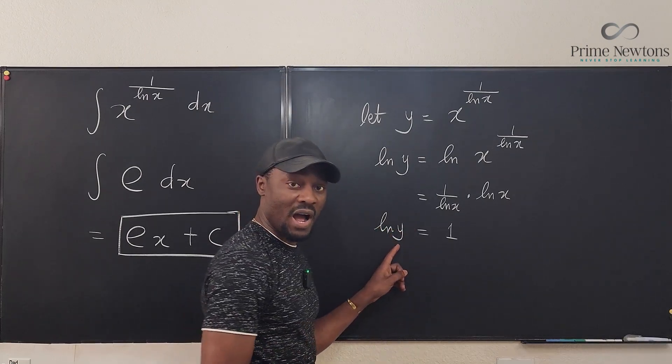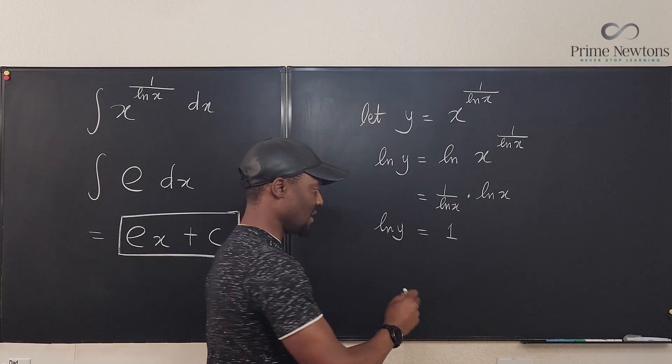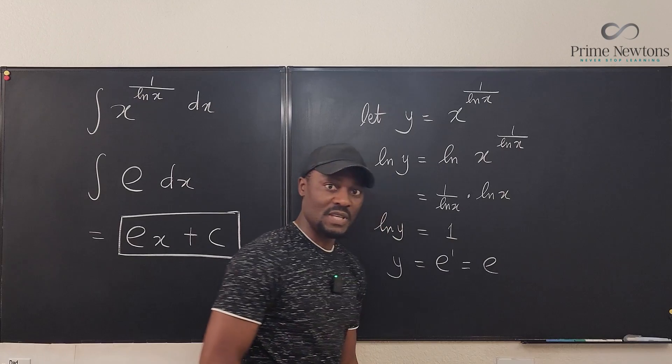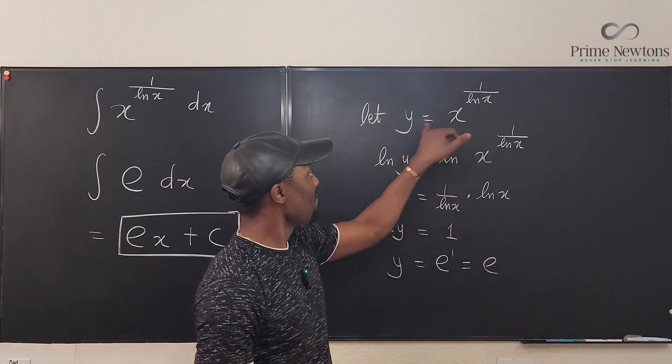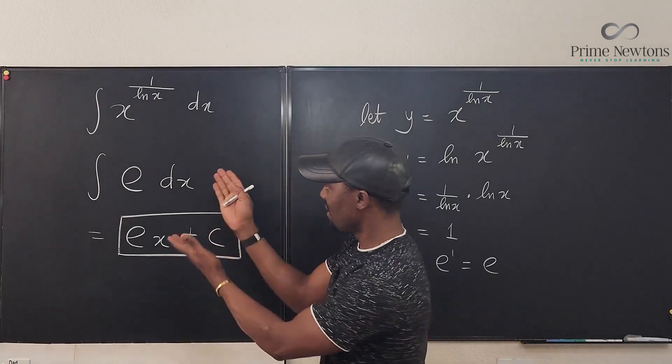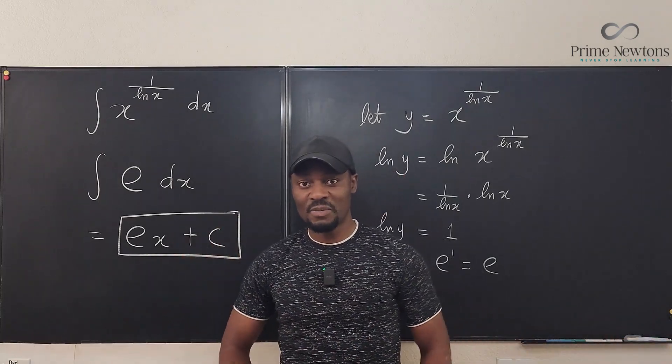So if I want to get my y, I just take the e of both sides, and this gives me y, and this is e to the 1, which is equal to e. So you see that y, which is this, is the same thing as e, and that was what MIT expected you to do.